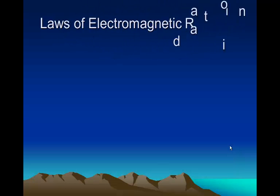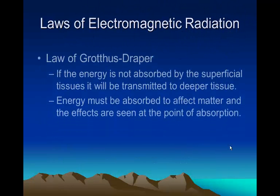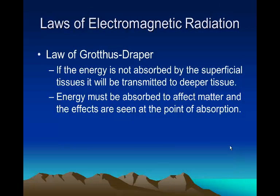Some more laws of electromagnetic radiation: the Grotthuss-Draper Law. If the energy is not absorbed by the superficial tissue, it will be transmitted to deeper tissue. Energy must be absorbed to affect matter, and the effects are seen at the point of absorption. If the energy isn't absorbed by the superficial tissue, then it will be transmitted deeper until it does get absorbed by deeper tissue.